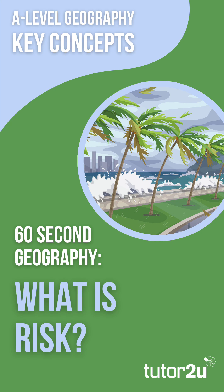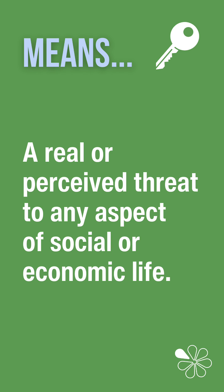Welcome to this 60-second geography short on risk, one of the key concepts at A-level geography. Risk is simply a real or perceived threat to any aspect of social or economic life. This is often due to a natural or human-induced hazard. It is a combination of the likelihood of a hazard occurring and the potential severity of its effect, and it is linked to vulnerability.